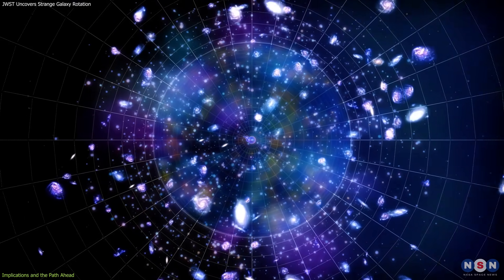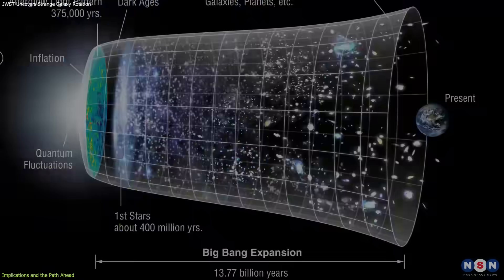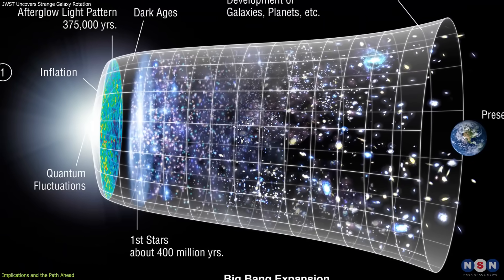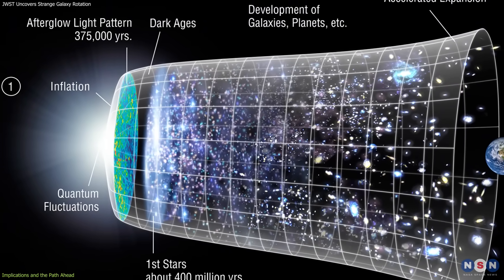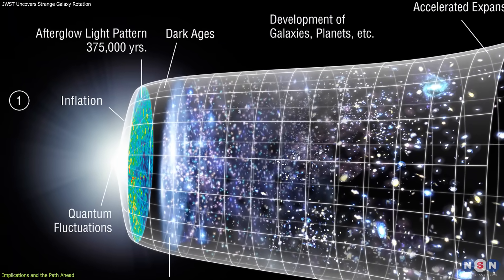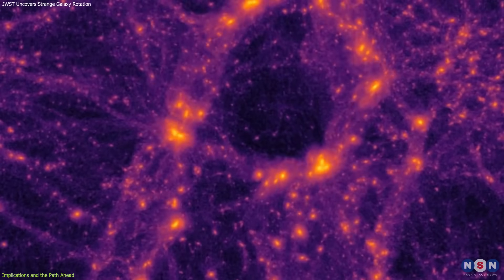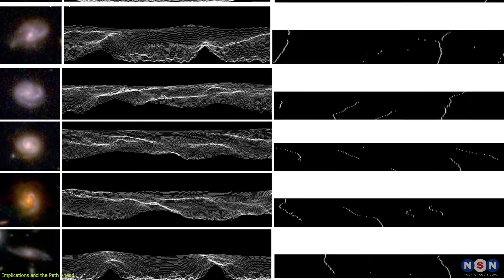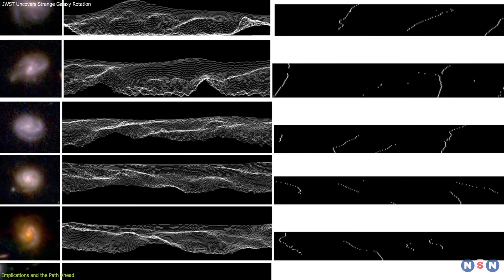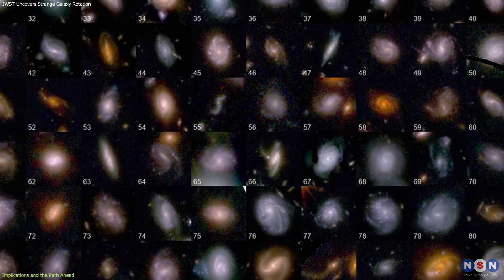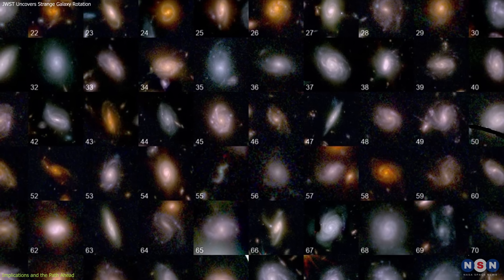especially as we push toward earlier and fainter galaxies. The standard model of cosmology, built around inflation, dark energy, and general relativity, has held up remarkably well, but it assumes large-scale symmetry. A confirmed global rotation would break that assumption, requiring new models to explain how such a preference emerged.